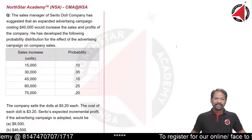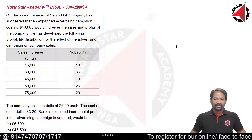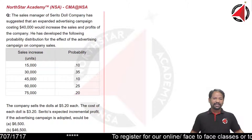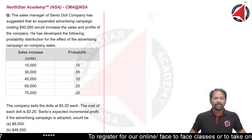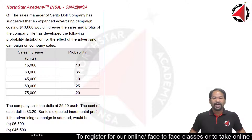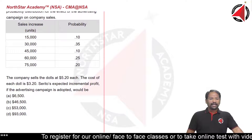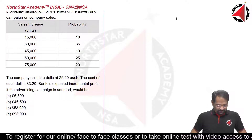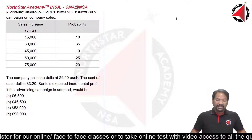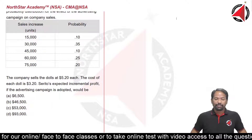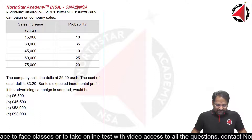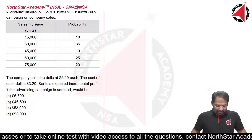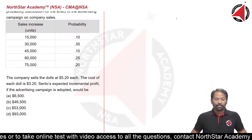Sales increase and probability are given — these are the incremental sales which are going to be due to advertisement expense. The company sells the dolls at $5.20 each and the cost of each doll is $3.20. Cerrito's expected incremental profit if the advertising campaign is adopted would be calculated as follows.